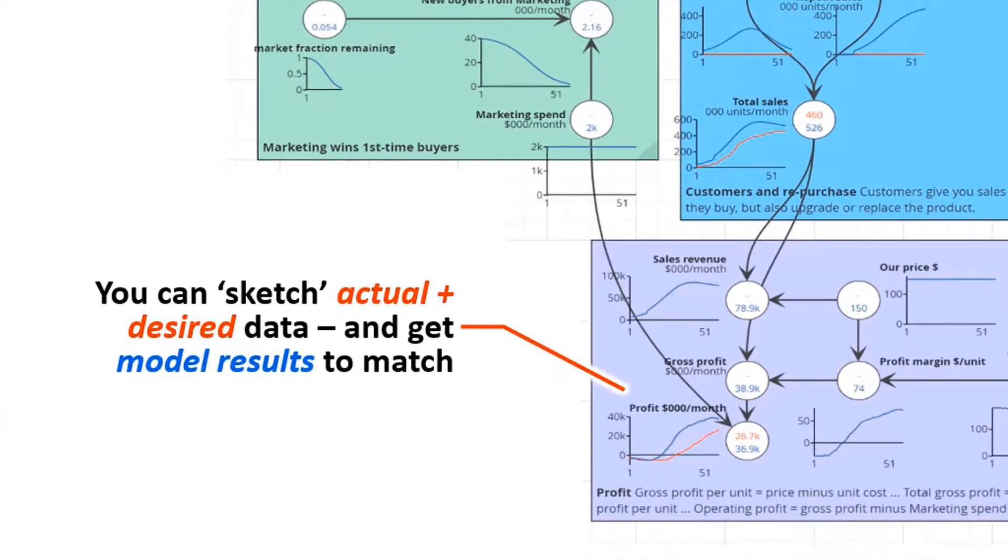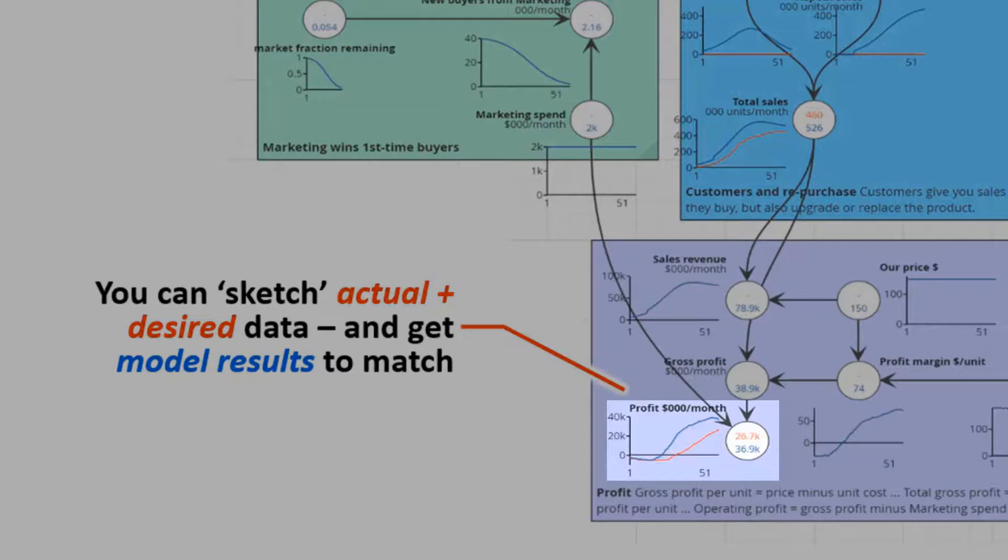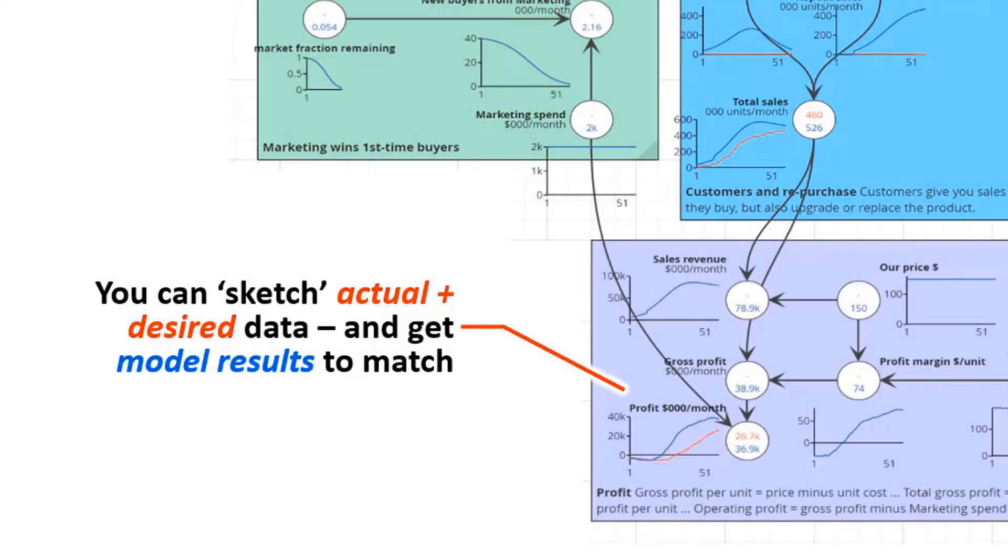Everything is crystal clear and it's not hidden away inside cell calculations. As Alan has done here, you can sketch in that profit forecast into the profit variable at the bottom of the model, and the sales forecast is in the sales item in the middle. You can put actual history values in there, and you're trying to get the model results to match the actual or desired data. If you don't get it to match, then the model's wrong or you can't achieve what you were hoping.